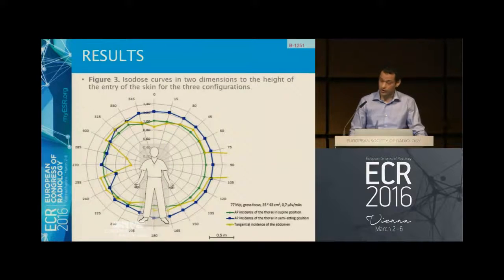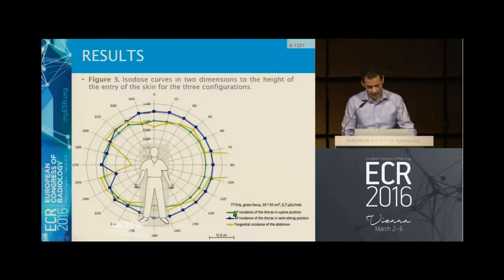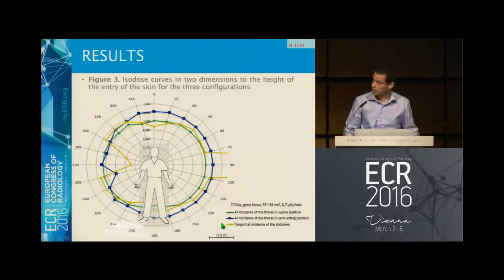Here we also performed some isodose curves in two dimensions at the height of the entry of the skin for three configurations. In green, we have the AP incidence of the thorax in supine position. In blue, we have the semi-sitting position, and in yellow, we have the tangential incidence of the abdomen.